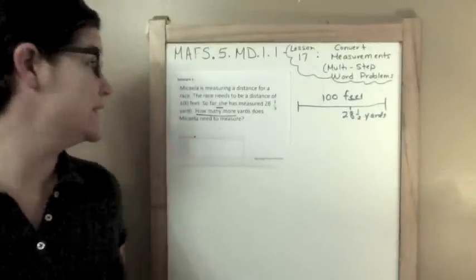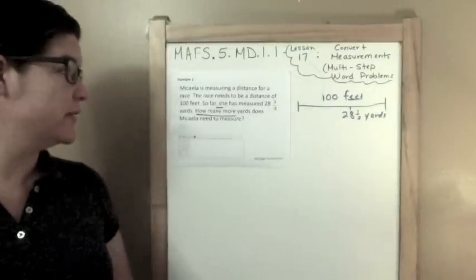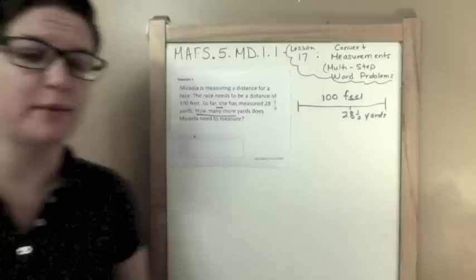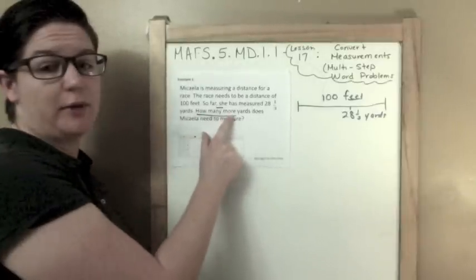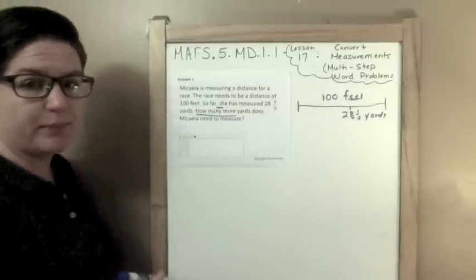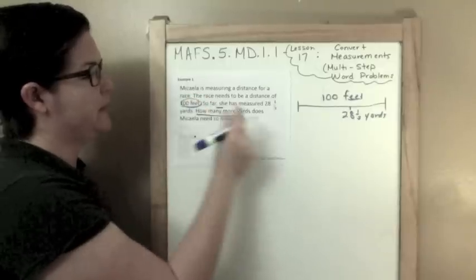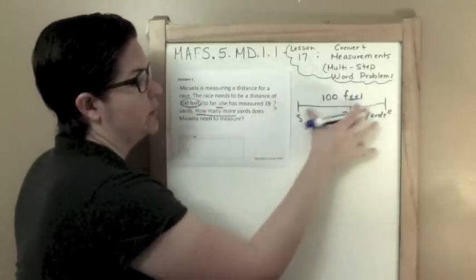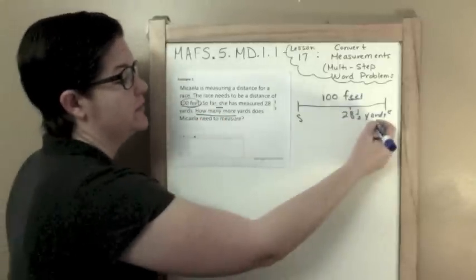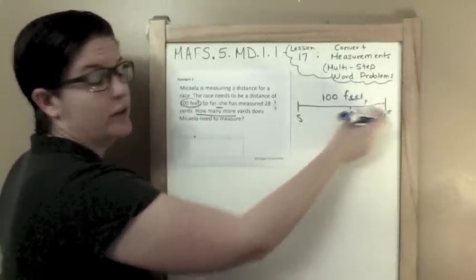Here is example number one. Mikayla is measuring a distance for a race. The race needs to be a distance of 100 feet. So far, she has measured 28.1 yards. How many more yards does Mikayla need to measure? I've underlined 'how many more' and labeled that as a subtraction problem I will eventually get to. So I've made my start and end a total of 100 feet, and so far she's measured 28.1 yards. Notice we have two different units, so our goal is to figure out how much more she has left.